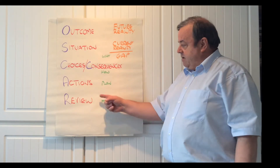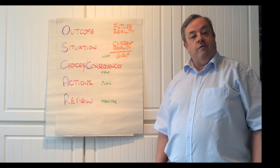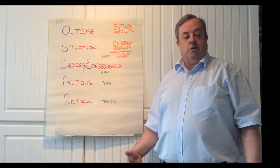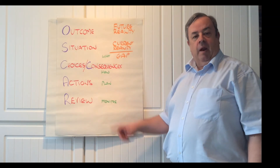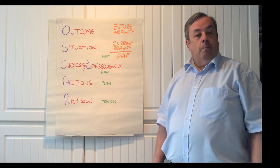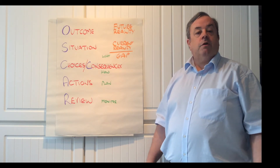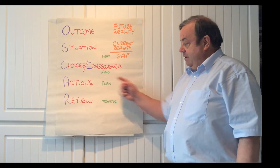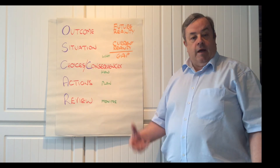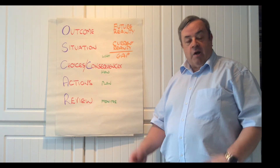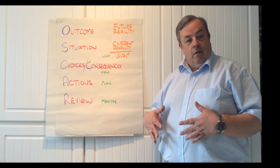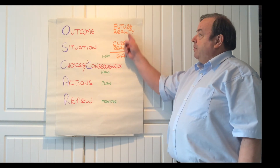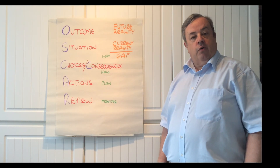However, OSCAR does of course take us to R — for review. You might think, well the GROW model presumes that once we have done all this work and built the plan then we will monitor and review. OSCAR just makes sure that we have that clearly in our sights, so that the plan would include the KPIs, the measurements, the pinch points, and the times that we're going to review with the individual so that we are sure that they're on their way to their future reality.